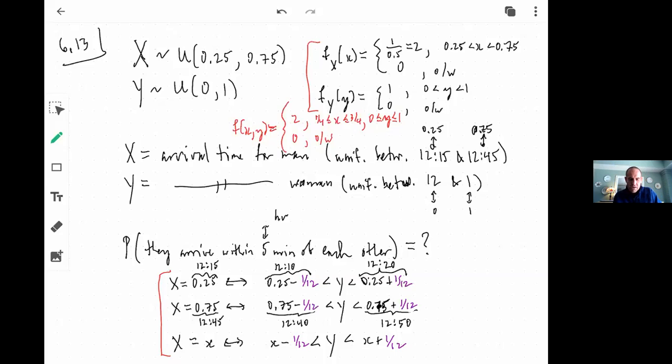It's just two whenever X is between a quarter and three quarters, and Y's between zero and one, and it's zero otherwise. And we even just drew a sketch of that in that other discussion that we had.